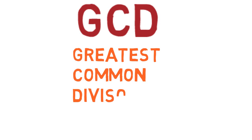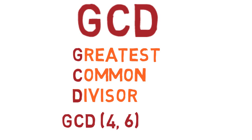Remember that the GCD is the greatest common divisor. For example, the GCD of 4 and 6 is 2, because 2 is the greatest number that's a factor of both 4 and 6.